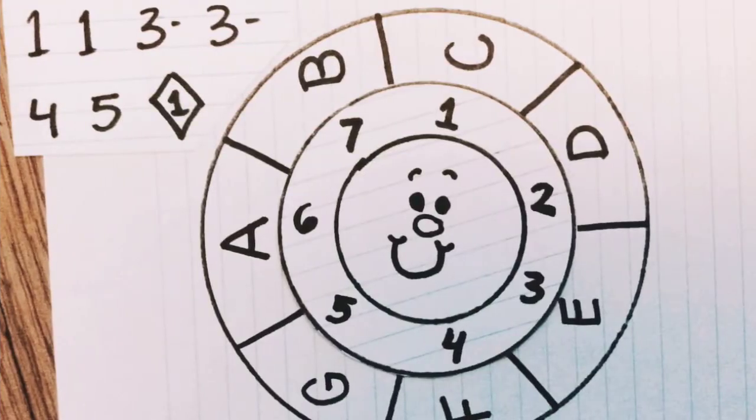Moving it up to the key of C, the 1 is C, the 3 is E, the 4 is F, and the 5 is G, and it would sound like this.